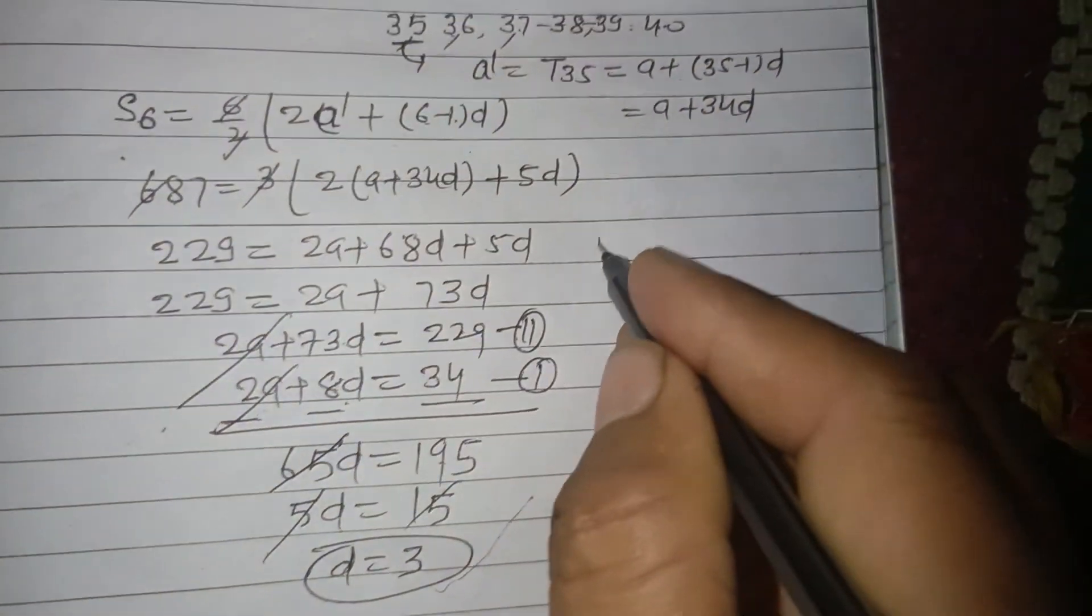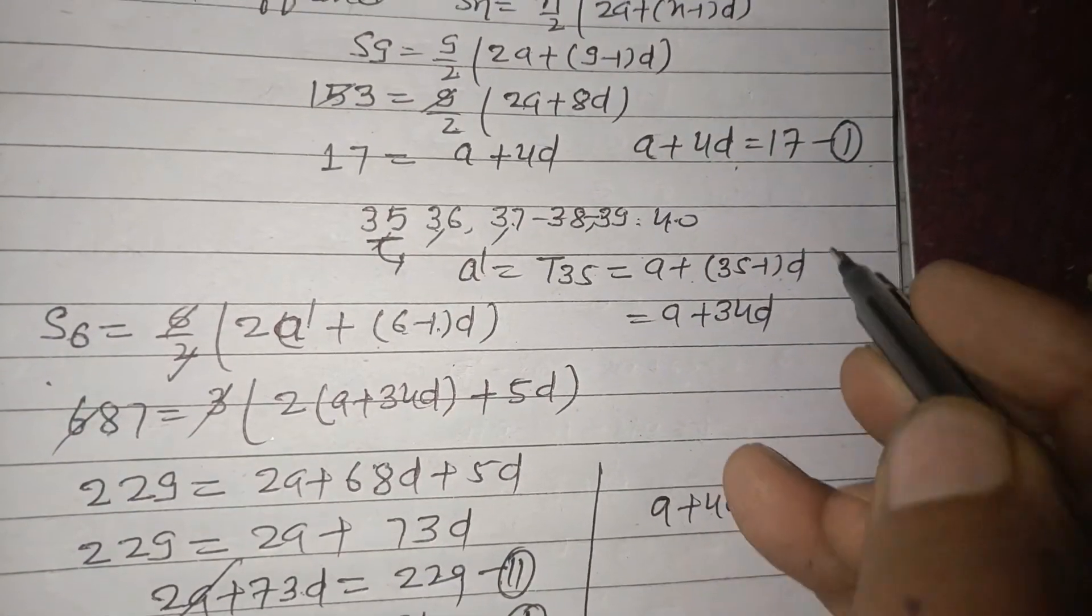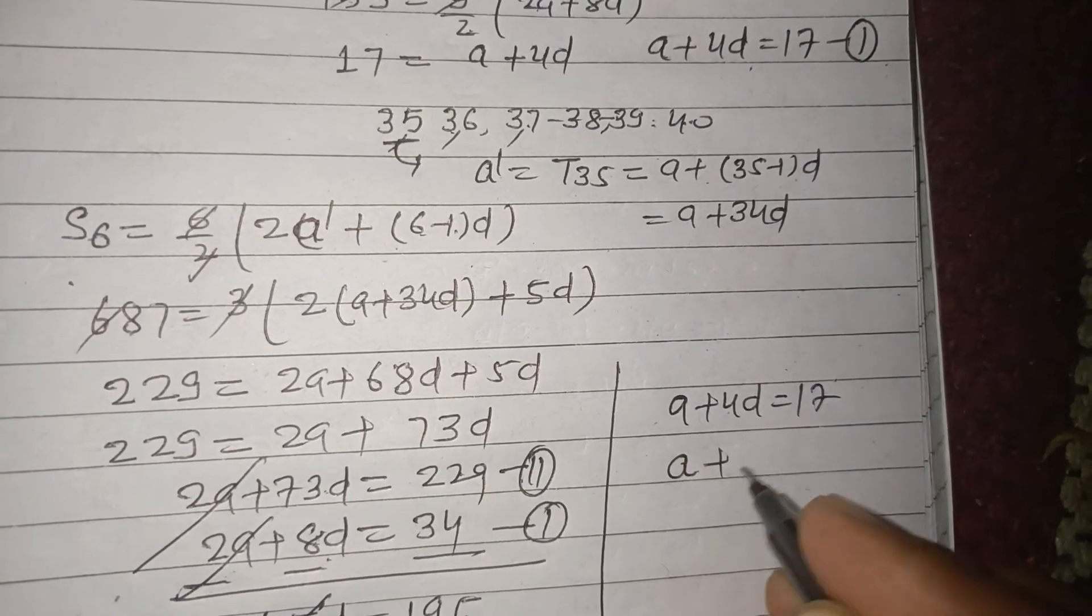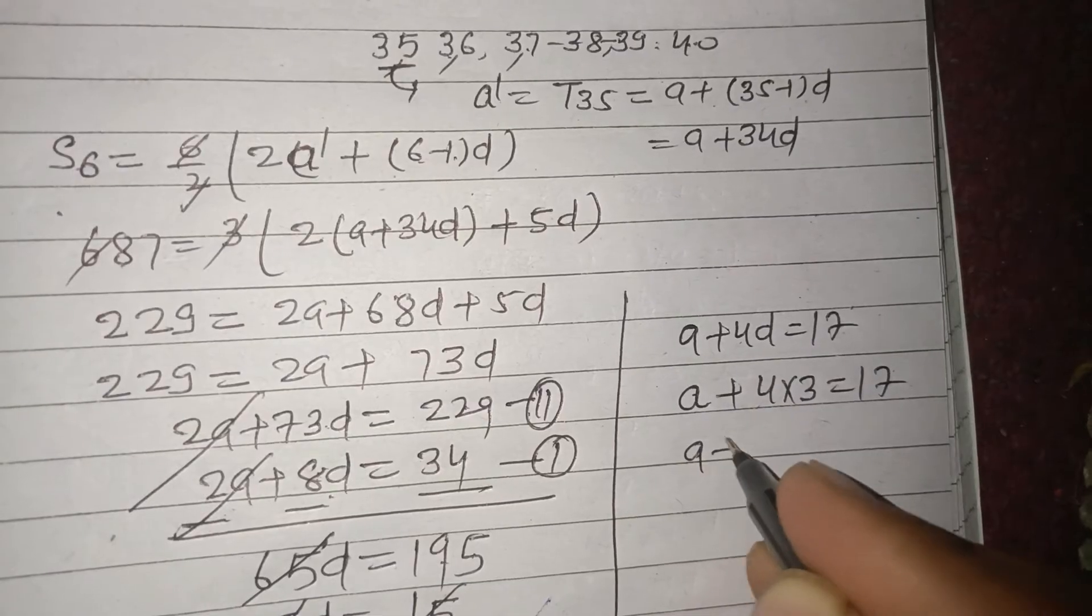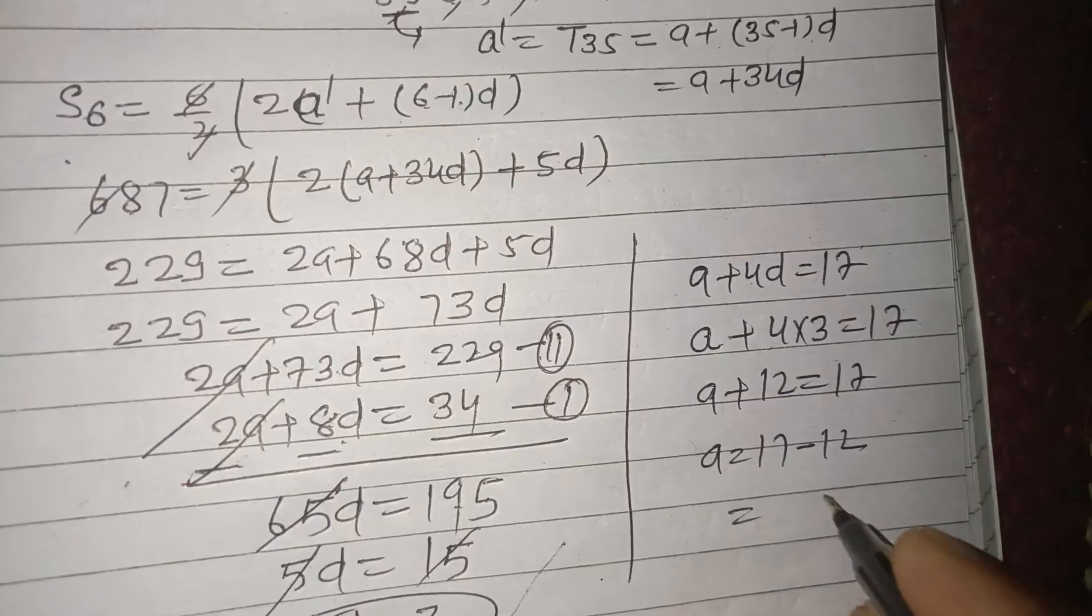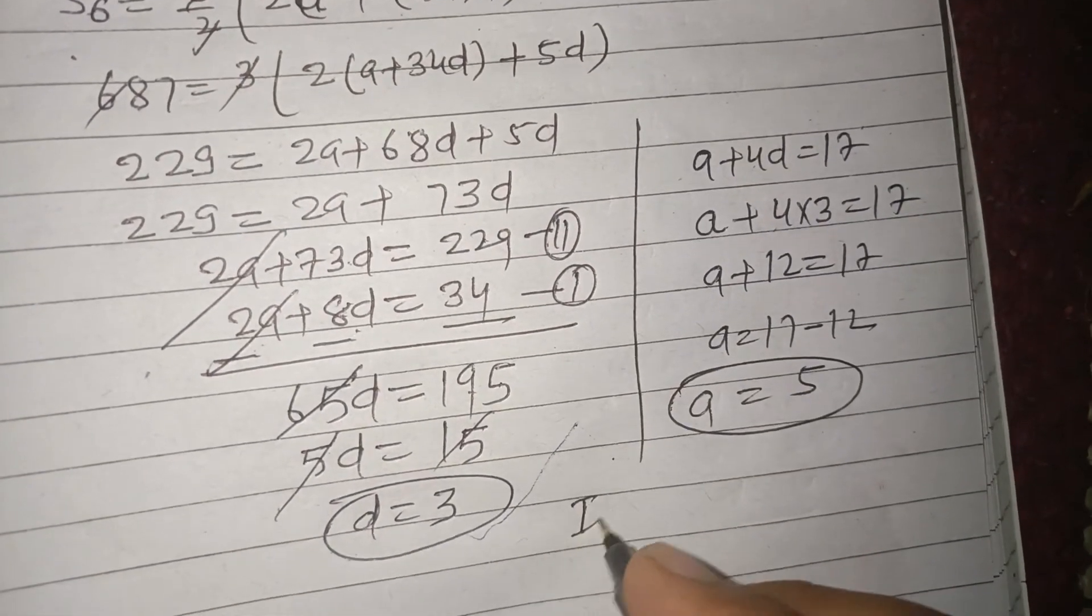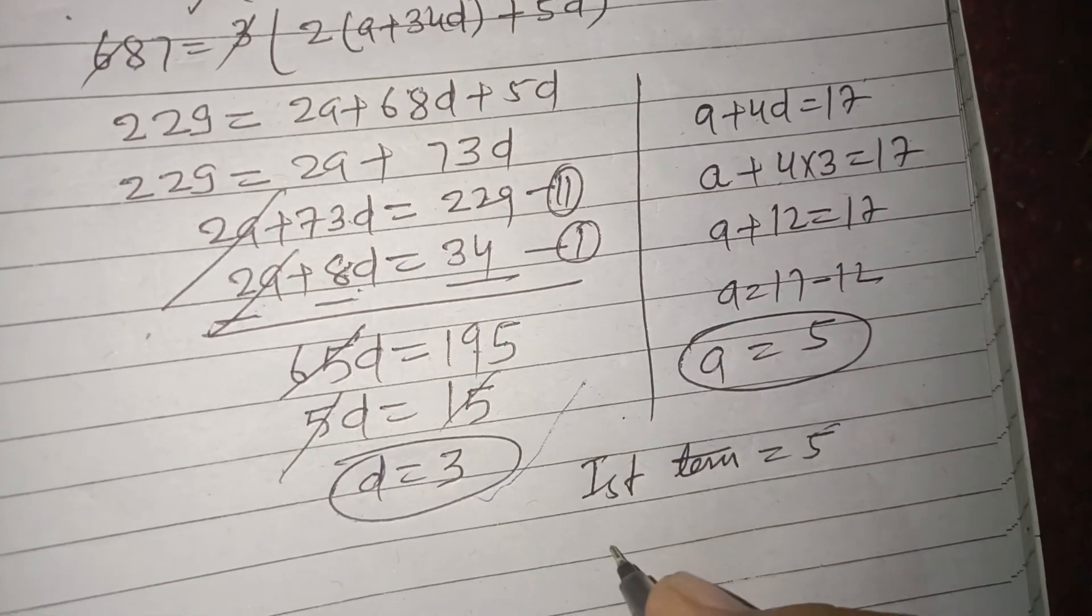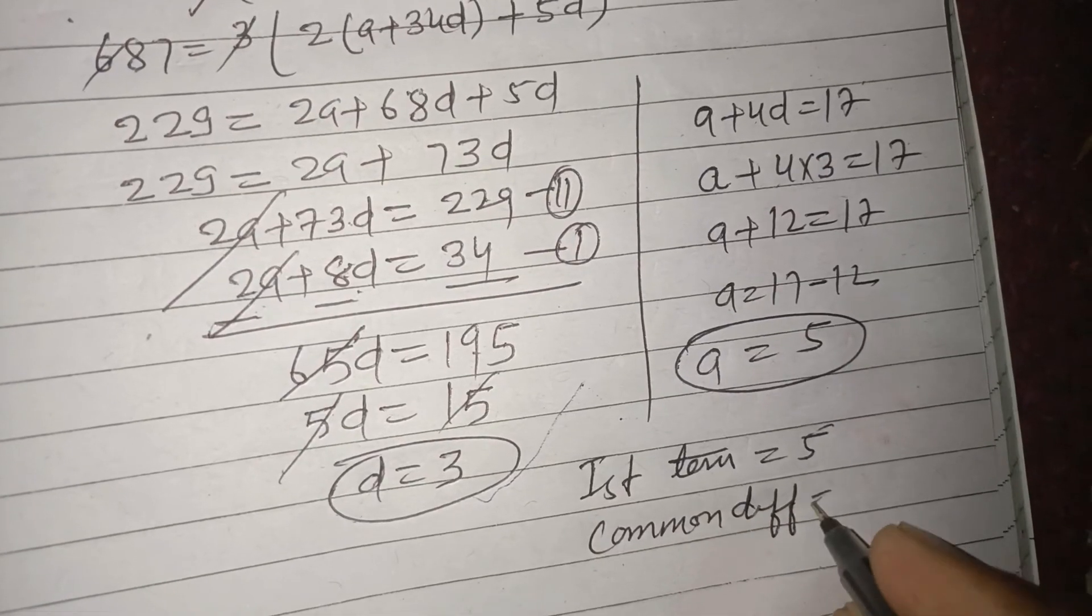And A plus 4D equal to 17. Using first equation, we put here D is 3. So A plus 4 times 3 equals 17. A plus 12 equal to 17. A equal to 17 minus 12, this is 5. So A equal to 5, first term is 5, and common difference equal to 3.